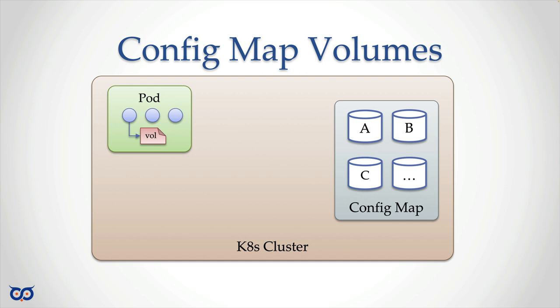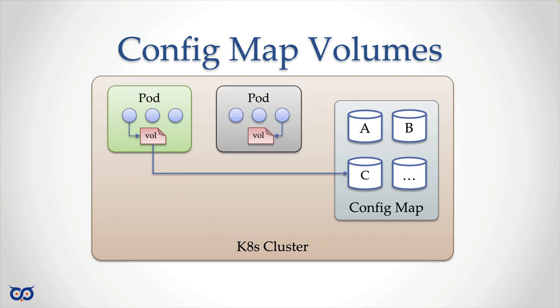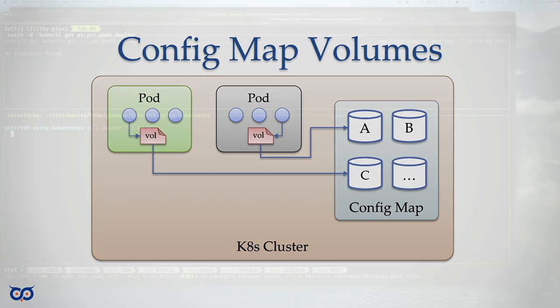The question now is where is the storage or information for that volume being provided. Before we had the simple empty directory type, but now we're going to have a special type that says this volume gets its information from a config map — specifically config map C in this example. Another pod could also define a volume sourced from config map A. This is read-only information, so we don't need to worry about one pod writing to it.